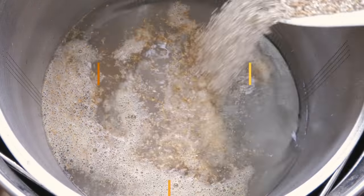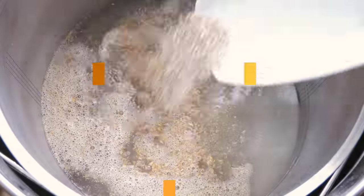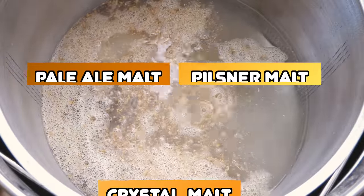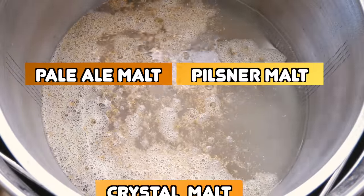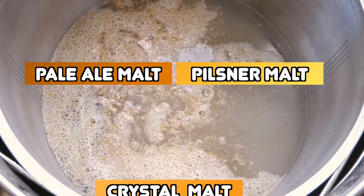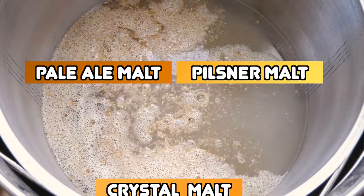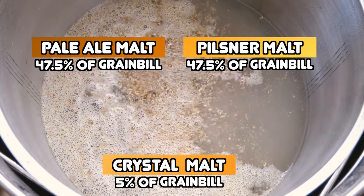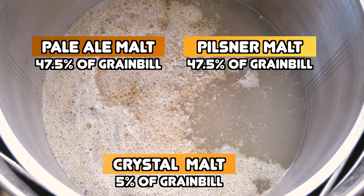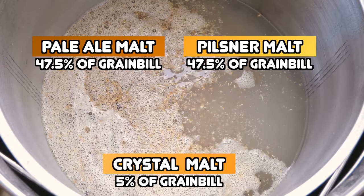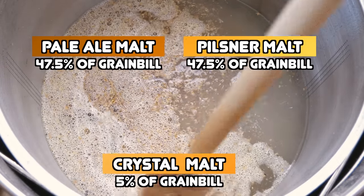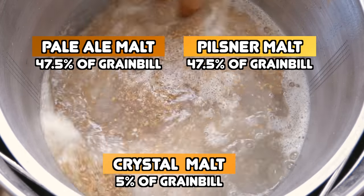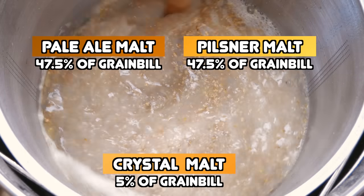This grain bill consists of 47.5% Pale malt and the same of Pilsner malt. The remaining 5% is crystal malt. Both the Pale and Pilsner malt will be there in balance to provide the bulk of our fermentables and to create an interesting background and a canvas for our flavours.